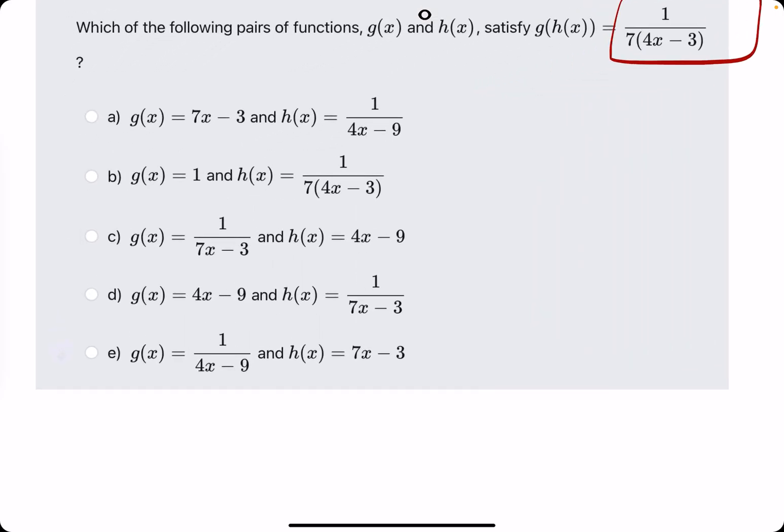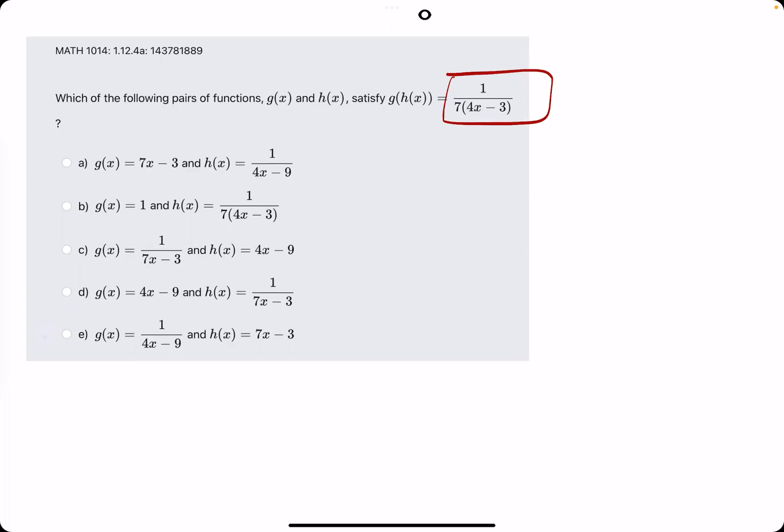Sometimes you can do this just by looking at them. Other times you might have to actually try it out and work it out a little bit. So I'm going to just do a rough go through of every single one plugging h into g because h is our inside function. So g of x is originally 7x minus 3, but with h plugged in, it would be 7 times 1 over 4x minus 9 minus 3.